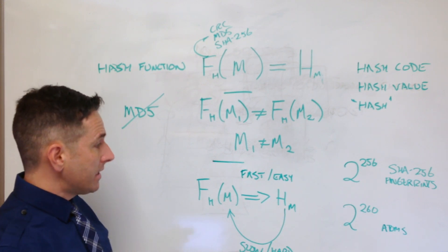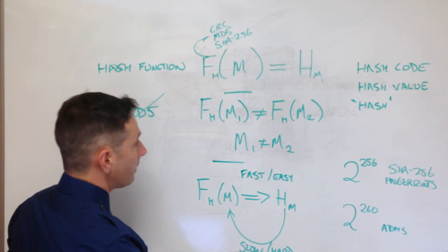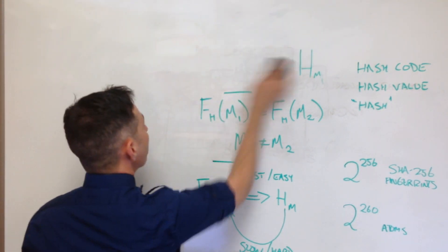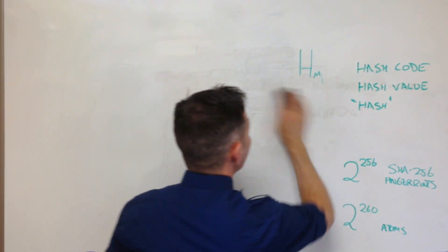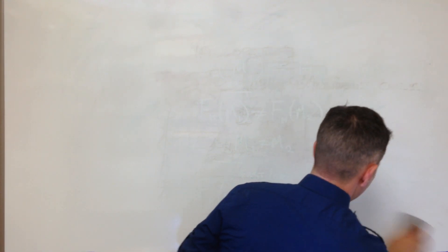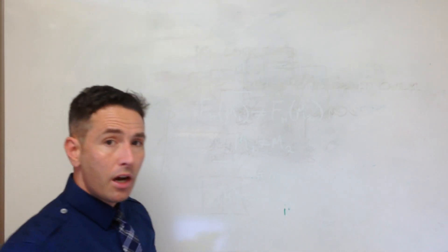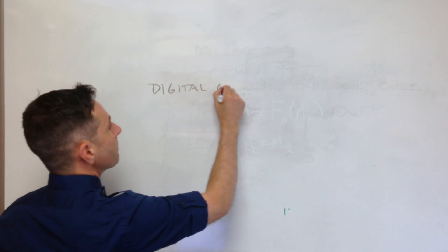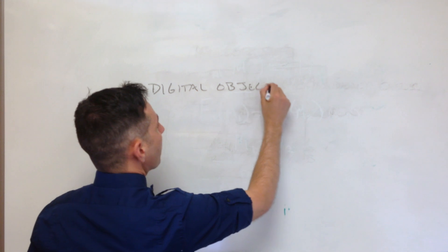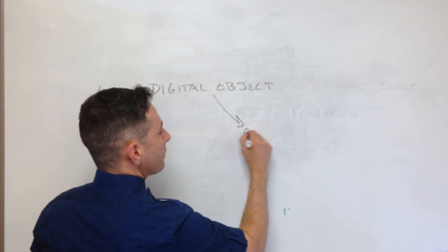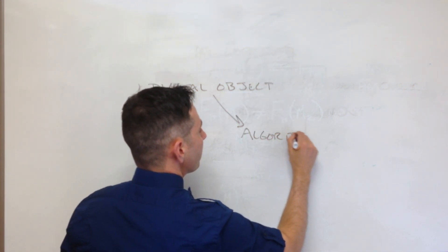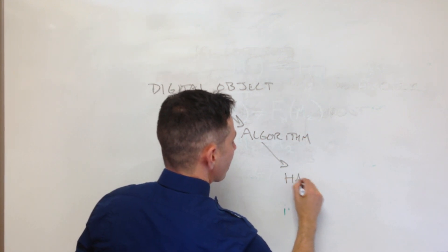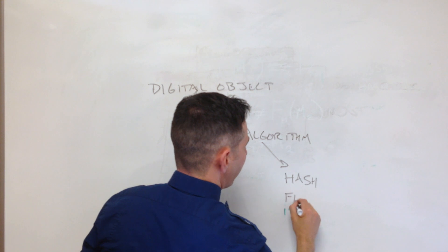Okay, so this is the basic idea with hash functions. What we need to know is that a hash function takes a digital object, passes it through an algorithm and produces the hash, which is like a fingerprint.